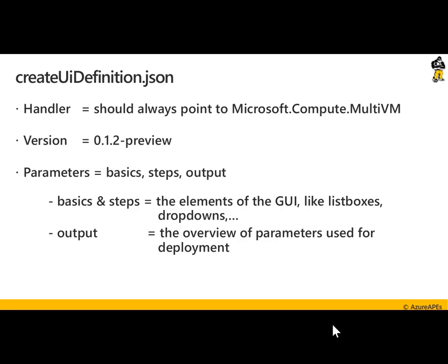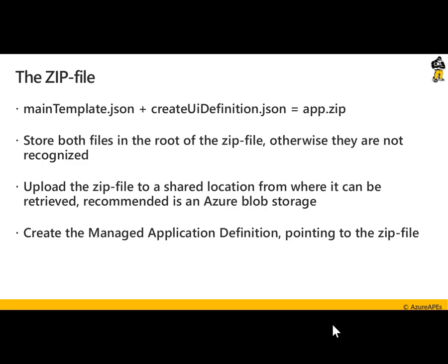The output provides you the overview of the parameters used throughout your deployment. Once you have those two files, you can create your zip file — taking the mainTemplate.json and createUiDefinition.json and adding them into a zip file, where the zip file can have about any custom name you want. You store both files in the root of the zip file, because otherwise they won't be recognized — no subfolders are allowed within the zip file. You upload the zip file to a shared location, and the recommended location would be Azure Blob Storage. In the last step, you create a managed application definition pointing to the zip file.